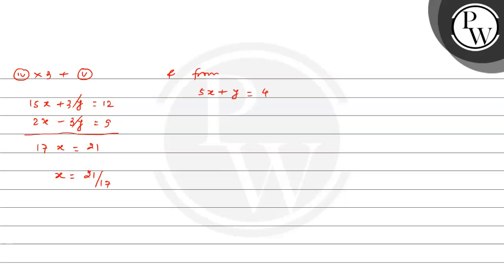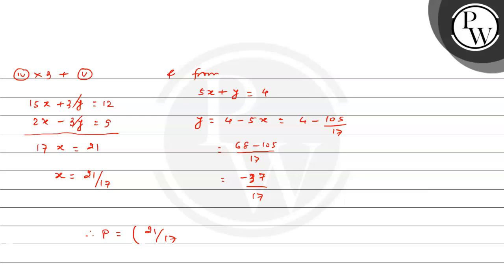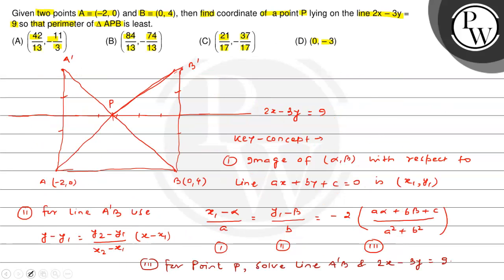Substituting x = 21/17 into 5x + y = 4: y = 4 - 5×(21/17) = 4 - 105/17 = (68 - 105)/17 = -37/17. Therefore P = (21/17, -37/17). The most appropriate option for this question is Option C: (21/17, -37/17).